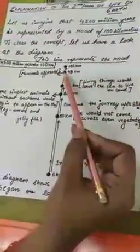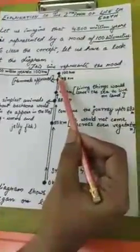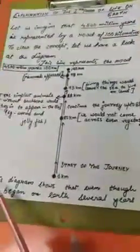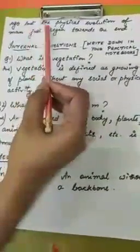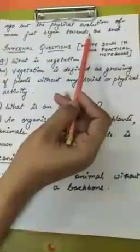From 98 kilometers to 100 kilometers, we notice that only 2 kilometers were left. This shows that even though life began on Earth several years ago — from 0 kilometers to 100 kilometers — the physical evolution of man just began towards the end, at 98 kilometers.